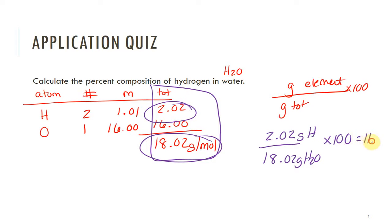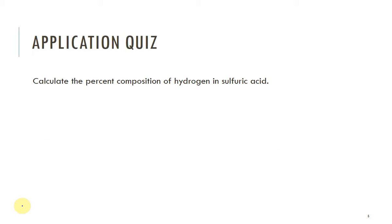Kind of like that for sulfuric acid. Again guys, I'm not going to make you come up with the formula H2SO4, but calculate the percent composition of hydrogen in sulfuric acid. Let's make a table: atom, number, mass, and total. Here we've got hydrogen, sulfur, and oxygen. There's two hydrogens, one sulfur, and four oxygens.